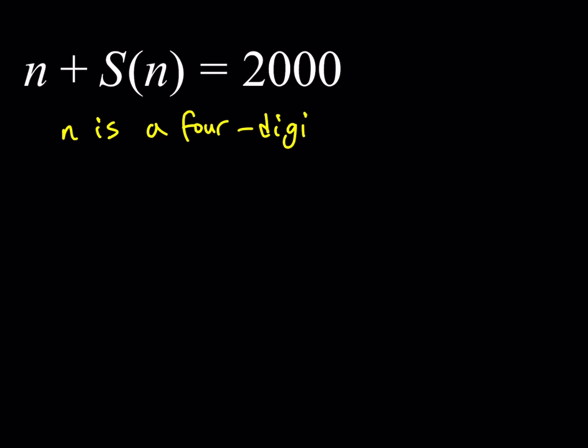We can actually say something about n and S of n. Since n is a positive integer in this case, S of n is also going to be greater than zero. But at the same time, if you think about it, a four-digit number, if it's composed of all nines, like 9999, then the sum is going to be 36. So the sum of the digits of our number needs to be less than or equal to 36. That's the highest it can be as a four-digit number.